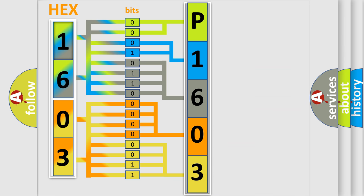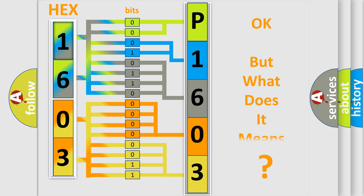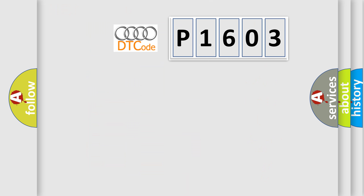We now know in what way the diagnostic tool translates the received information into a more comprehensible format. The number itself does not make sense to us if we cannot assign information about what it actually expresses. So, what does the Diagnostic Trouble Code P1603 interpret specifically for Audi car manufacturers?